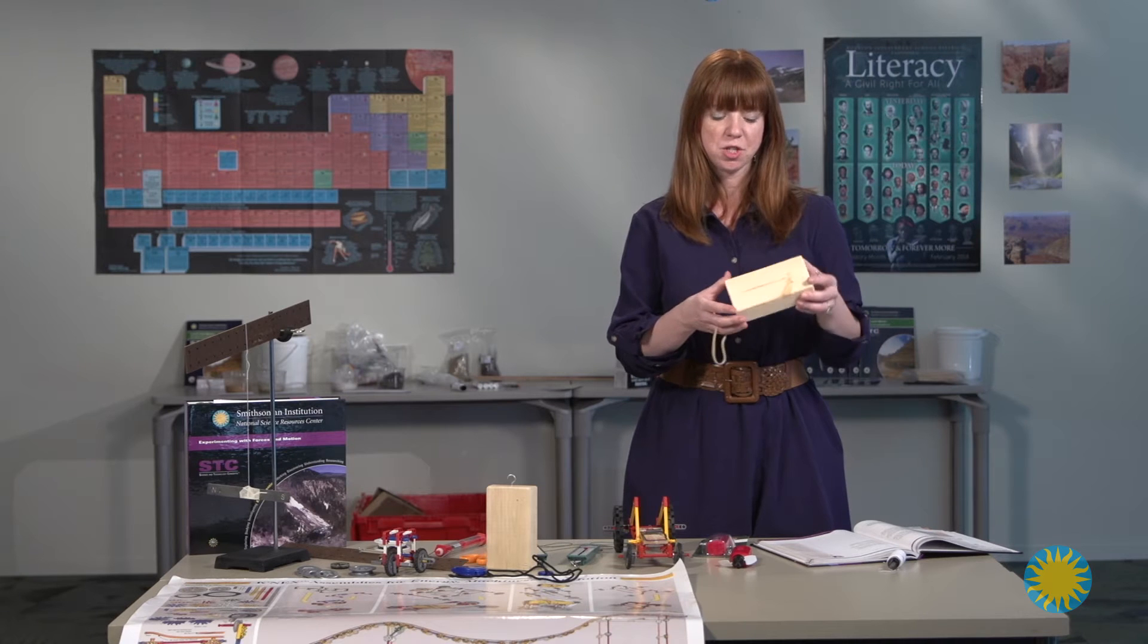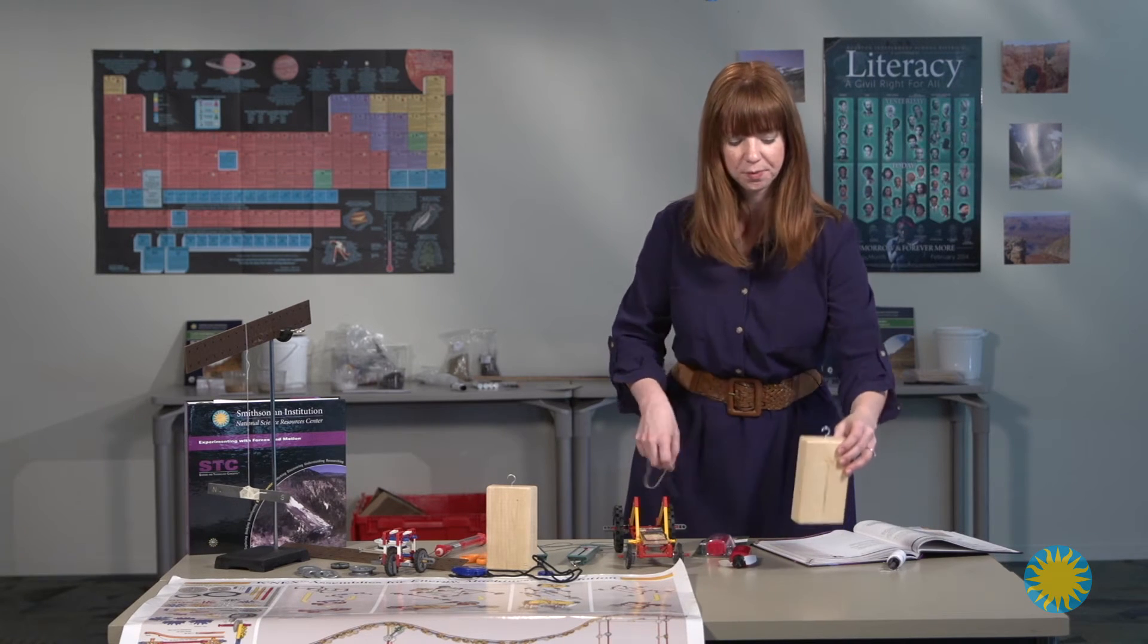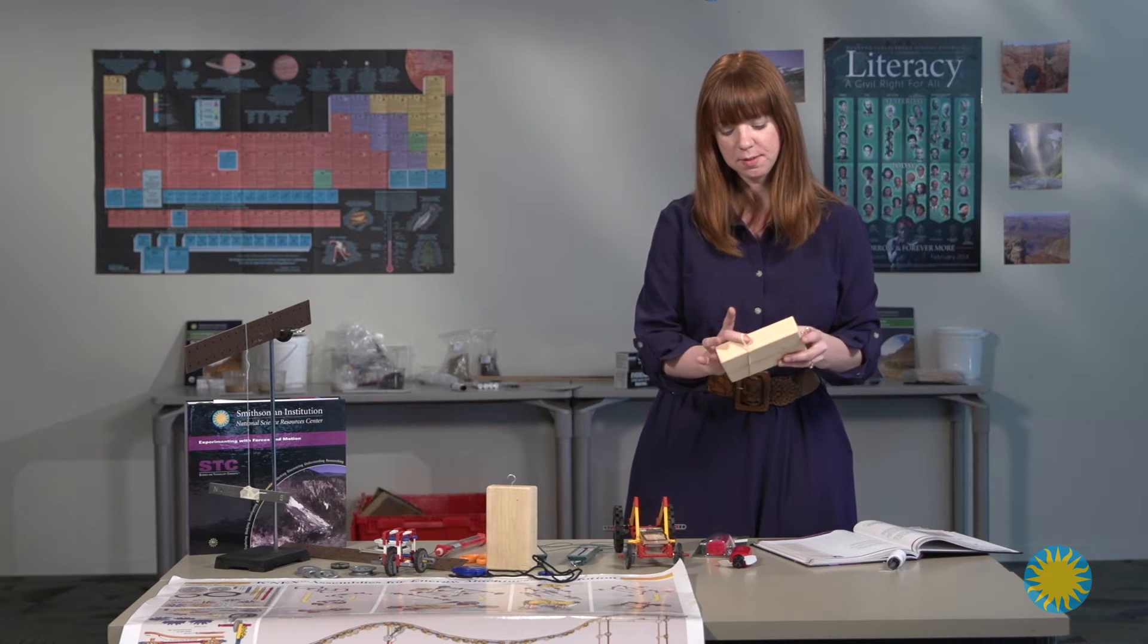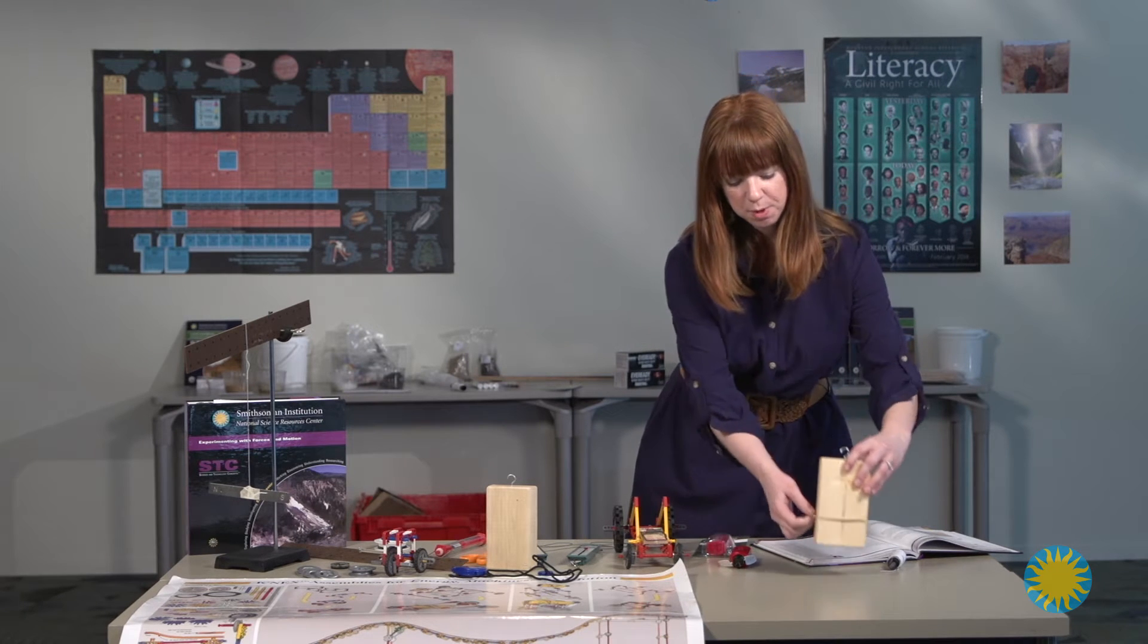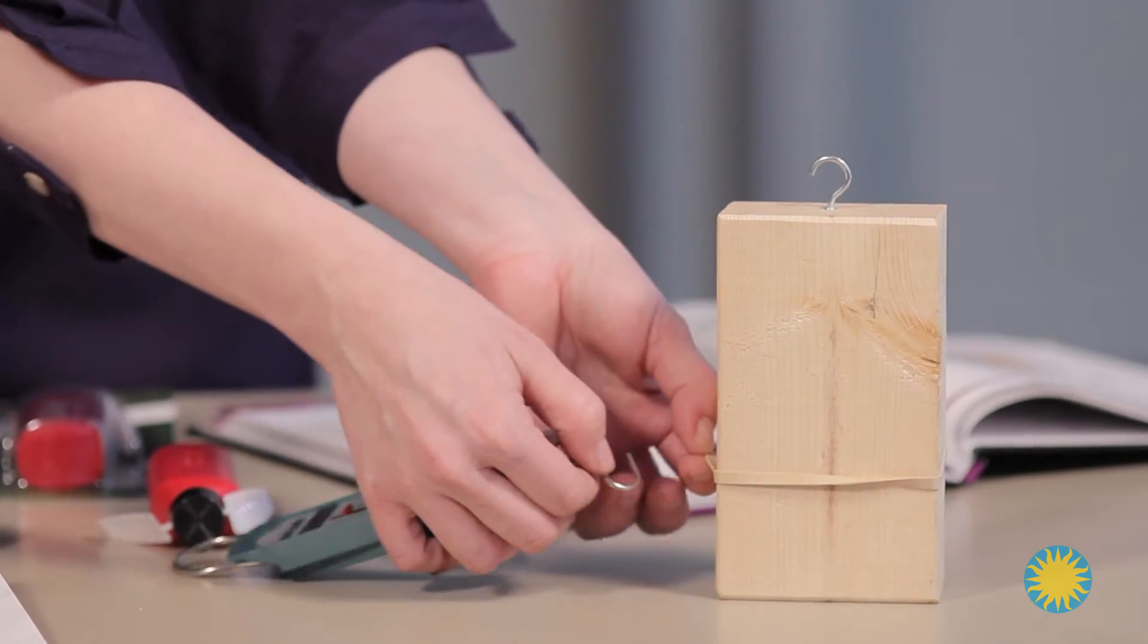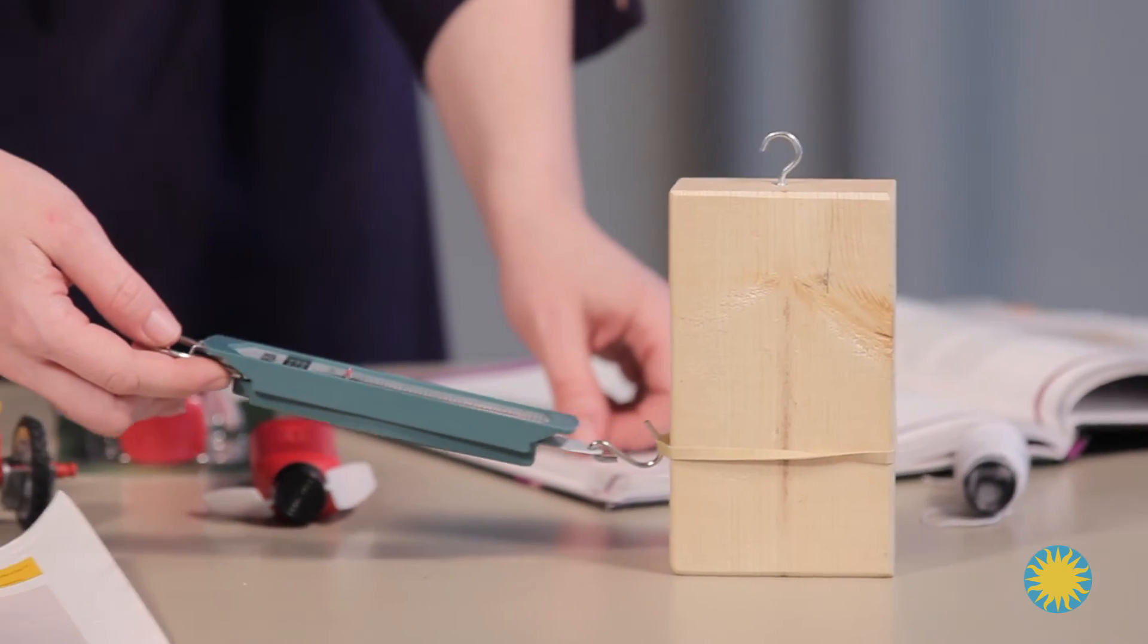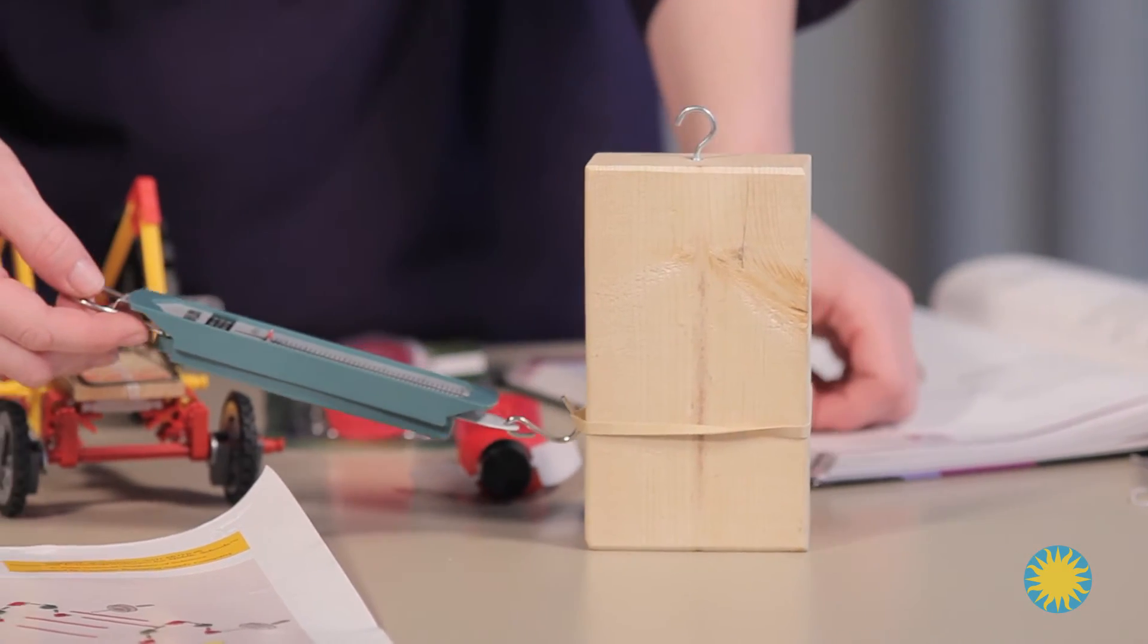So they've instructed you to test it in two ways. The first way is by holding it this way and you take the rubber band and the students are supposed to use the spring scale to then pull the block and then they're going to measure the amount of force needed to move the block.